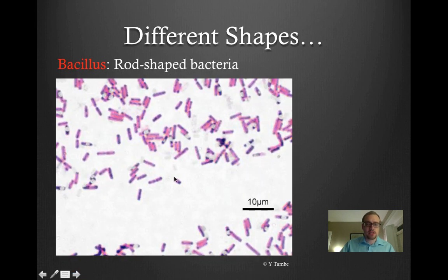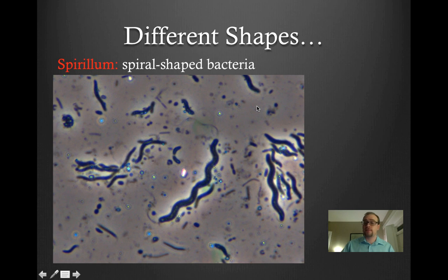The next type of bacteria are called bacillus bacteria, and these bacteria are rod-shaped. As you can see in this diagram, they are no longer spherical — they are elongated rods. The third type, if we are classifying by shape, is called spirillum. These are basically spiral-shaped bacteria. This type of bacteria is a lot more rare in nature, but there are some types of bacteria that have this spiral-like shape, as you can see in this picture.